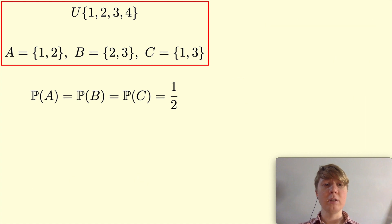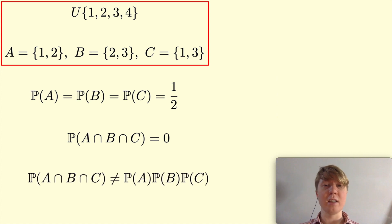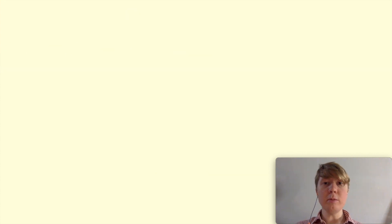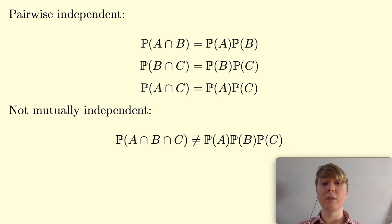However, if we look at the probability of all three happening, the intersection of A, B, and C is actually empty — there's no number in all three sets. So the probability of all three happening is zero, which isn't equal to one-half times one-half times one-half. So these three events are pairwise independent but not mutually independent, because the probability of all three happening doesn't satisfy the product rule.